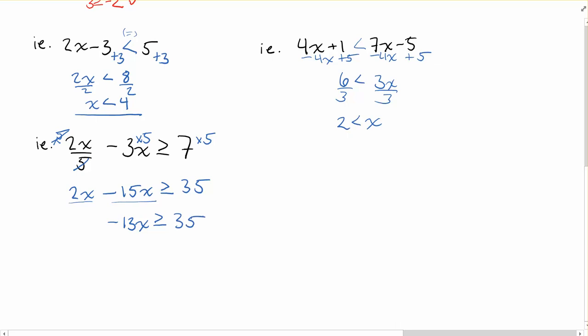I need to get x by itself still. That's negative 13 times x. I'm going to divide by negative 13 on both sides. Those cancel. I'm going to get x and 35 over negative 13. I said there's one situation where something different happens—this is that situation. I need to change the direction of my inequality. Flip it.